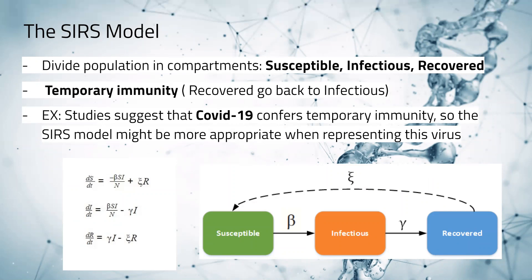The SIRS model is similar to the SIR model, but now people in the recovered group may move back to the susceptible group, since it is assumed that the disease no longer confers lifelong immunity and sometimes immunity is temporary. Studies suggest that COVID-19 confers temporary immunity, so the SIRS model might be more appropriate than the SIR model, as you'll see later.